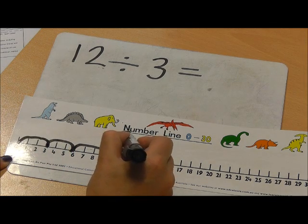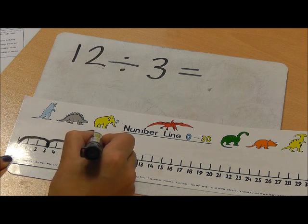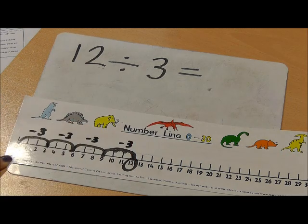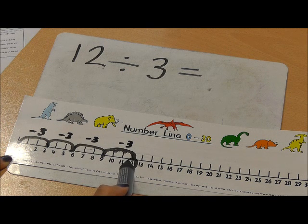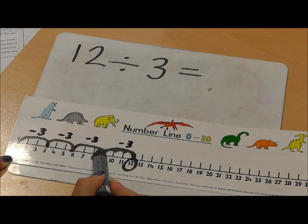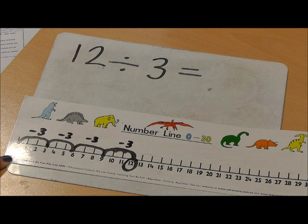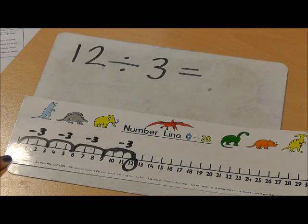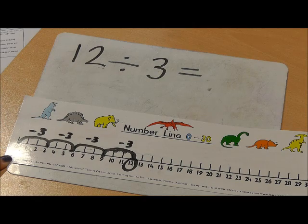So it's a double check. 3, 3, 3, 3. So I started at 12 and then I counted back in jumps of 3. I have made 4 jumps. So therefore my answer is 4.